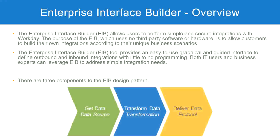What we are going to do is configure these three steps. First, get data — where are we going to get the data from? Second, do we need transformation? If yes, configure that; if no, leave it blank. Third, deliver the data — how are we going to send the data to an external system? Once we configure these three steps, our EIB is ready and we can start exchanging information from Workday with an external system.